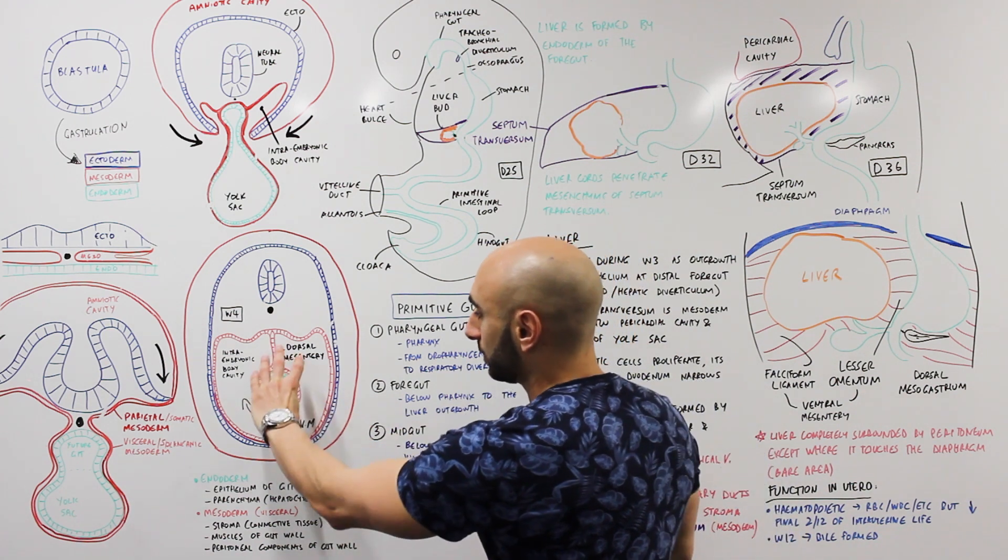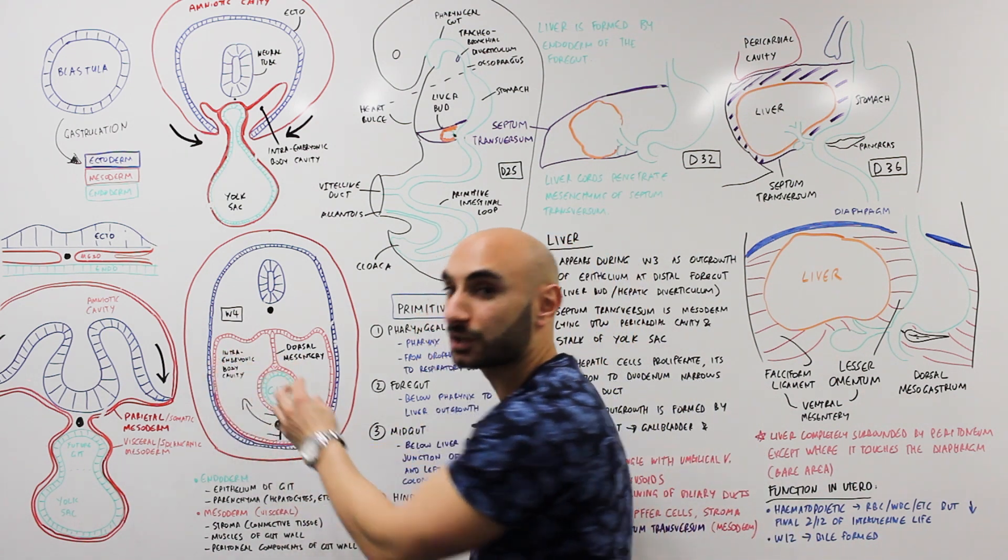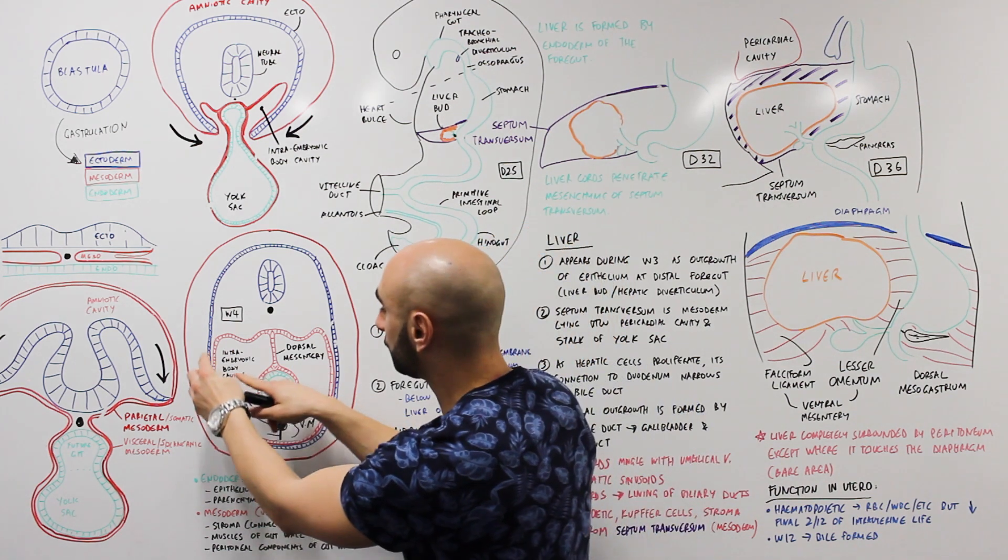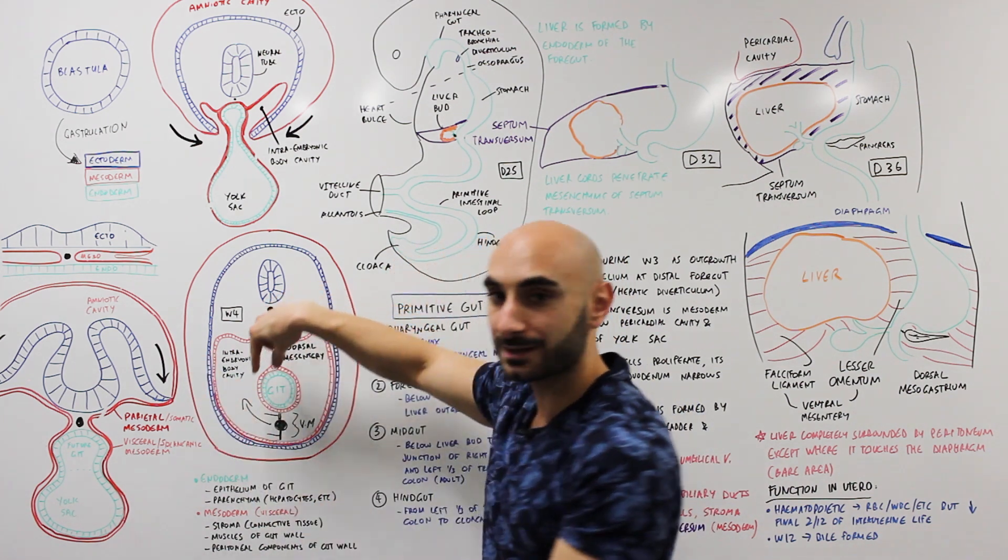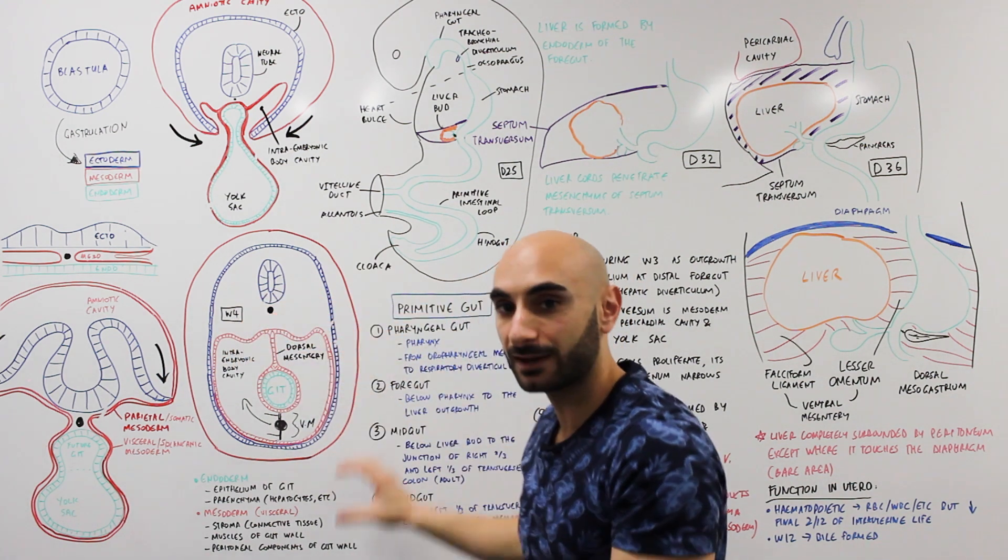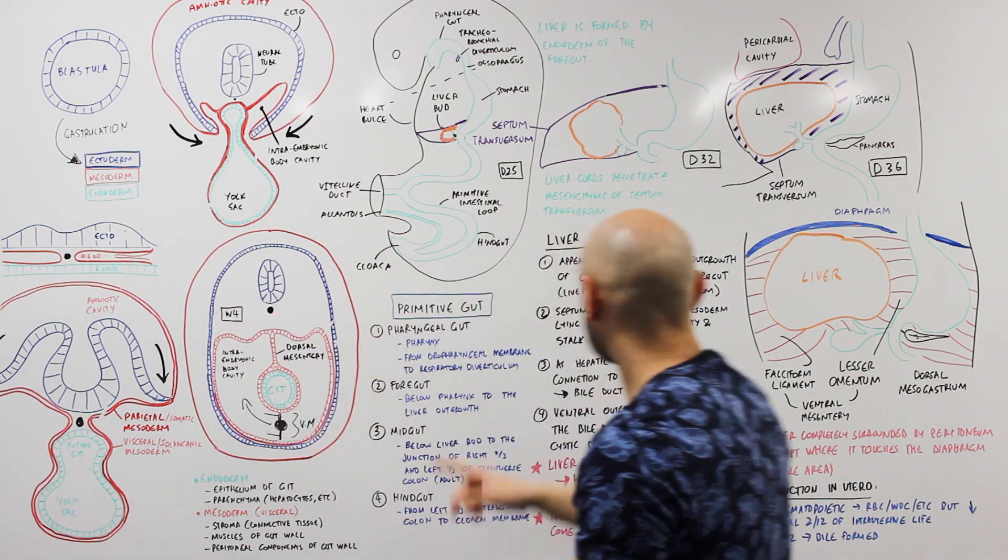Initially the liver is in the midline, but with stomach rotation it moves to its position in the right side and it pulls the connective tissue with it to the right, and the dorsal mesentery will be pulled to the left.